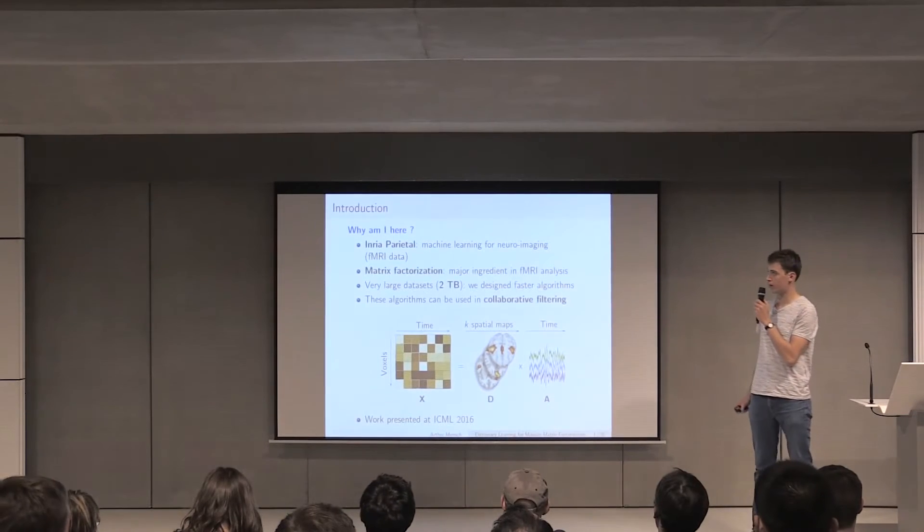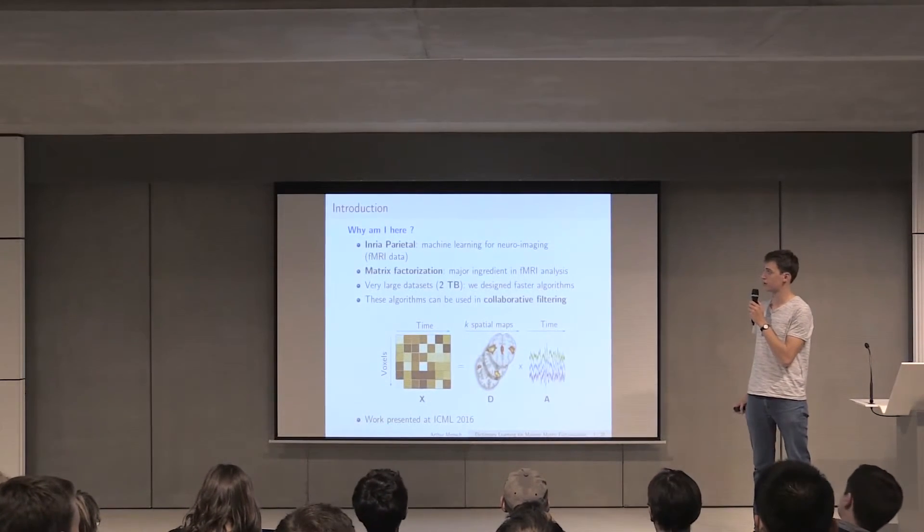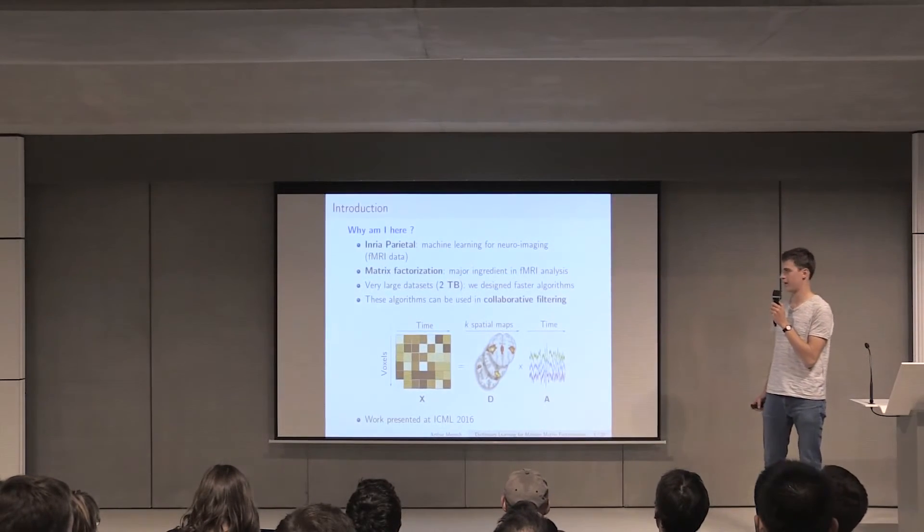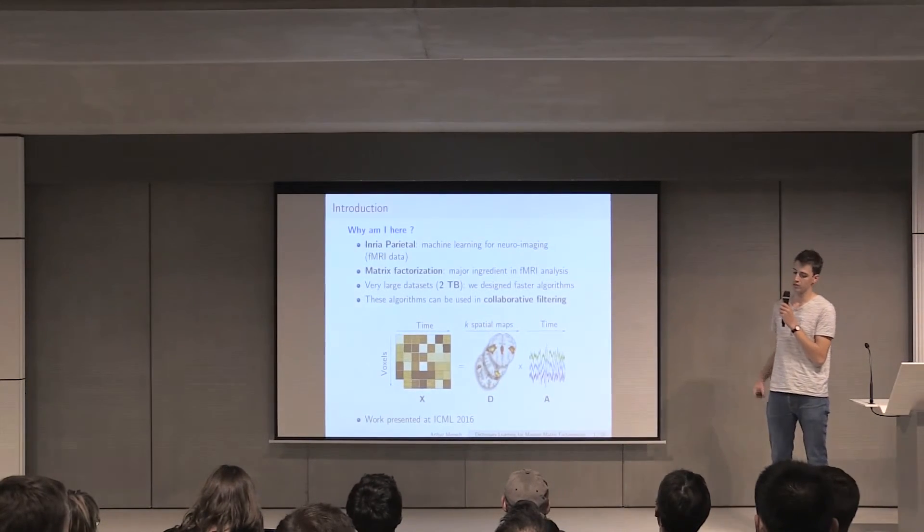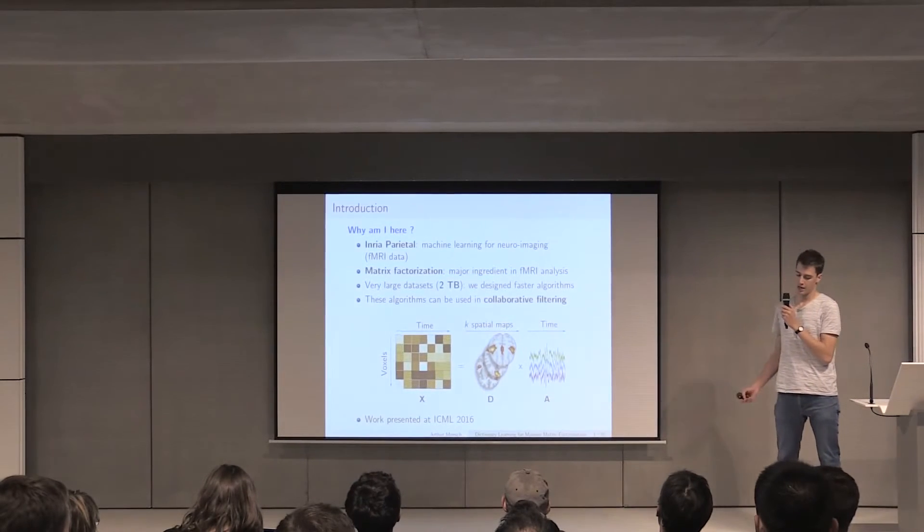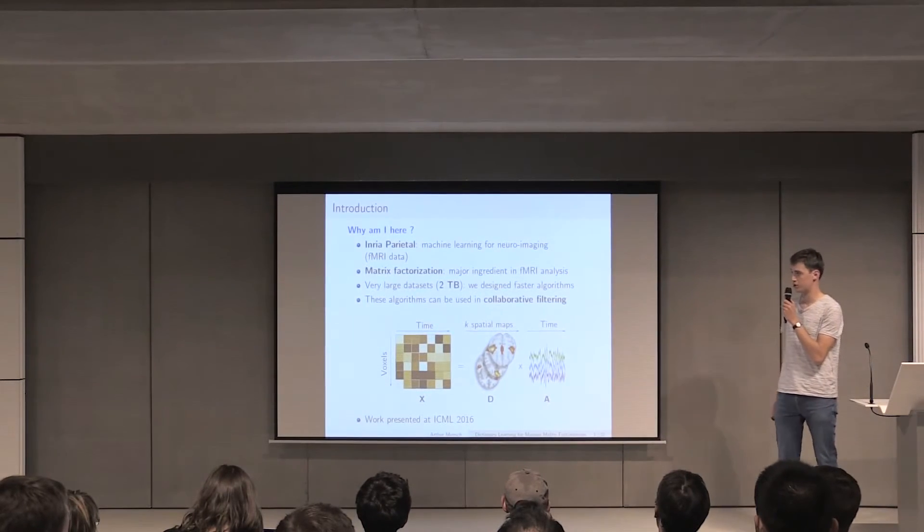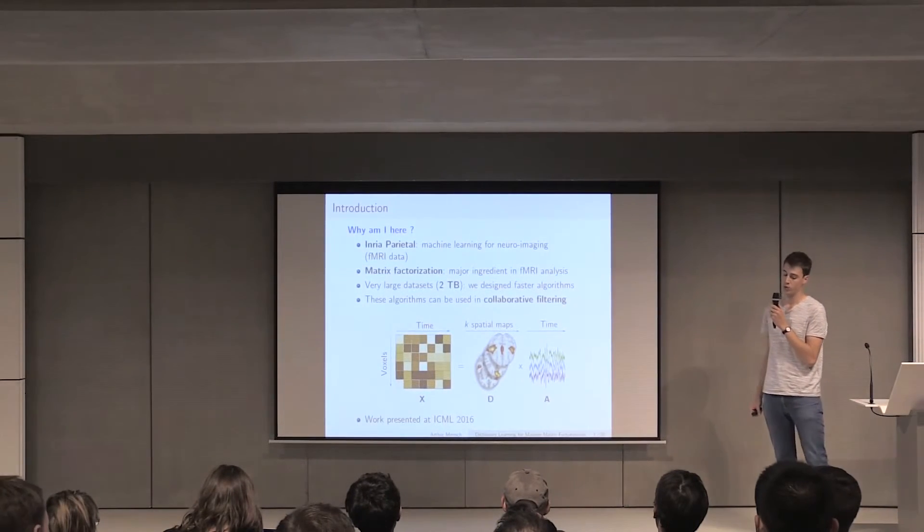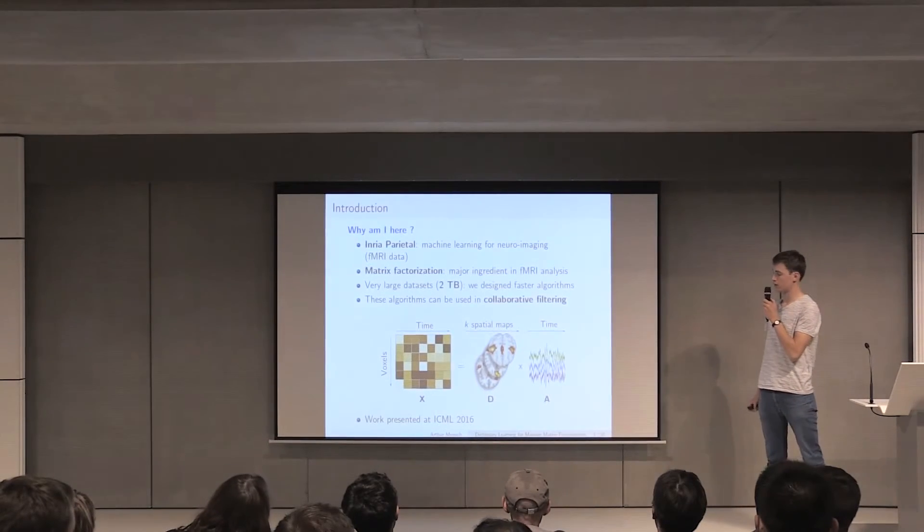Just to preface about why am I here, I'm from the Inria Parietal Group, which is an academic team that does machine learning for neuroimaging. We handle fMRI data and try to understand the brain. In this domain, matrix factorization is very important because the data we're looking at is very high-dimensional, and doing low-rank matrix factorization is a tool for reducing the dimension. Typically, we look at very large datasets, some of them are 2TB, for example, and we needed to design faster algorithms to perform this matrix factorization.